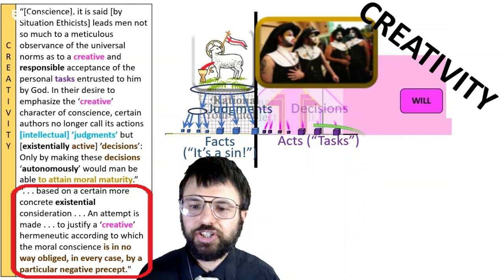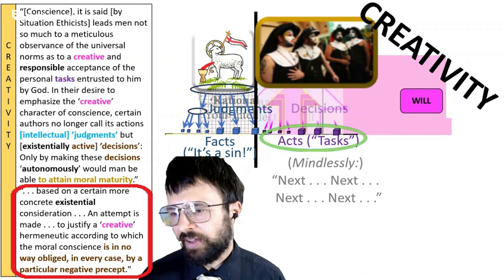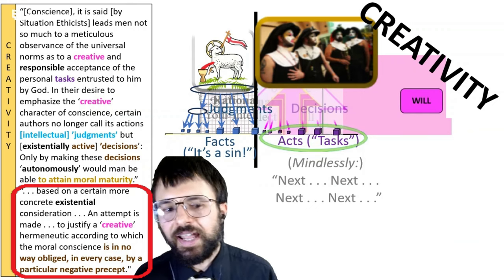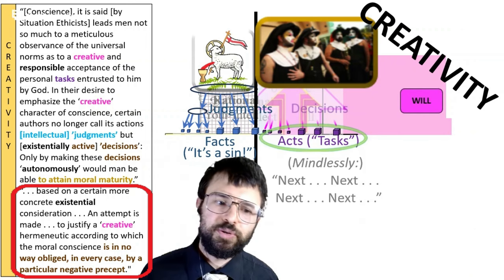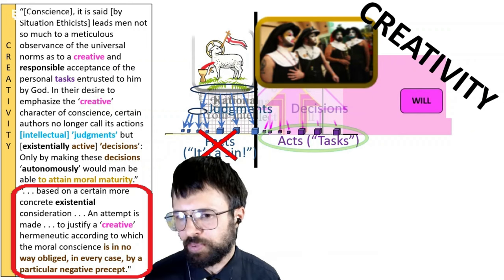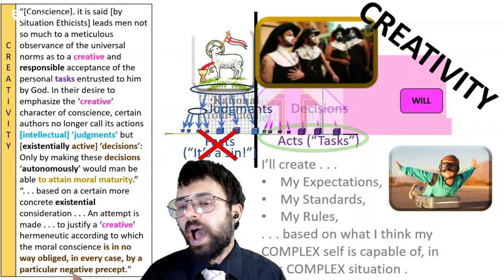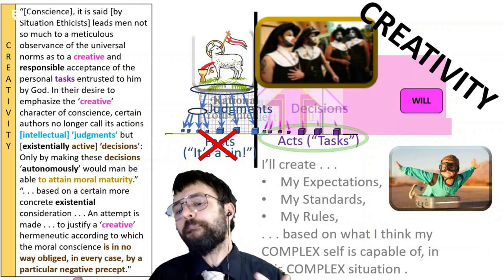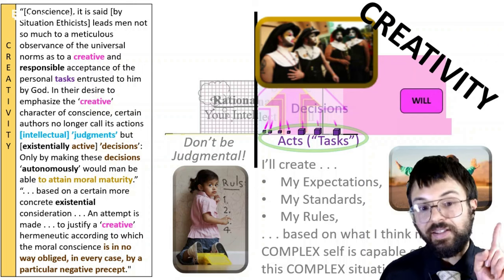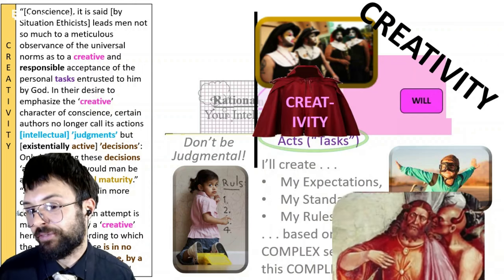Based on a certain more concrete existential consideration — and when you hear 'existential,' you want to think about existing right at the bottom layer of the rational level, like dopamine drop after dopamine drop — these ethicists will attempt to justify a creative hermeneutic according to which the moral conscience is in no way obliged by a particular negative precept, because we're being creative and it's just a decision. Basically this is like a child saying: I'll create my expectations, my standards, my roles based on what I think my complex self is capable of in this complex situation — and therefore blow apart all those rules and judgments. I'll set the rules. Don't judge! So of course we've created a cloak over the will so we can hide under it.